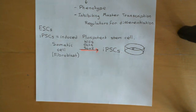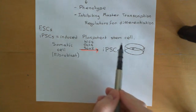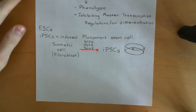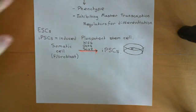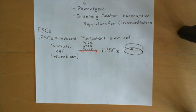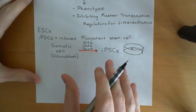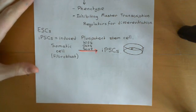iPSCs share two key properties with embryonic stem cells. First, they proliferate — that is a key property they share. The other key thing is that they are also pluripotent. Remember what pluripotent means in the context of embryonic stem cells: you can re-inject the cell into a blastocyst and it can participate in the development of any portion of the body. The same is true of induced pluripotent stem cells.